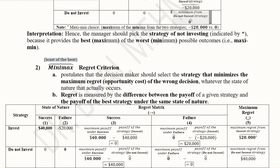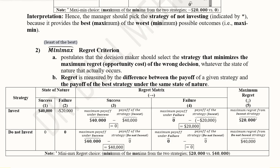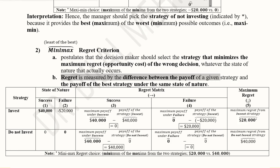We have a matrix that is slightly more elaborate than the previous one. This criterion allows us to select the strategy that minimizes the maximum regret, where regret is the opportunity cost of the wrong decision. Regret is measured by the difference between the payoff of a given strategy and the payoff of the best strategy under the same state of nature.